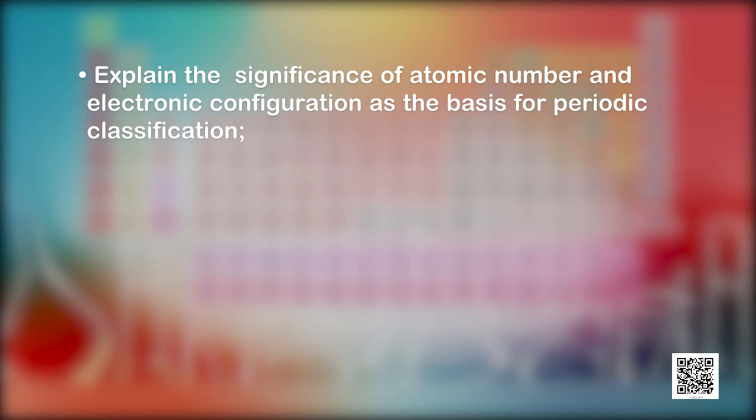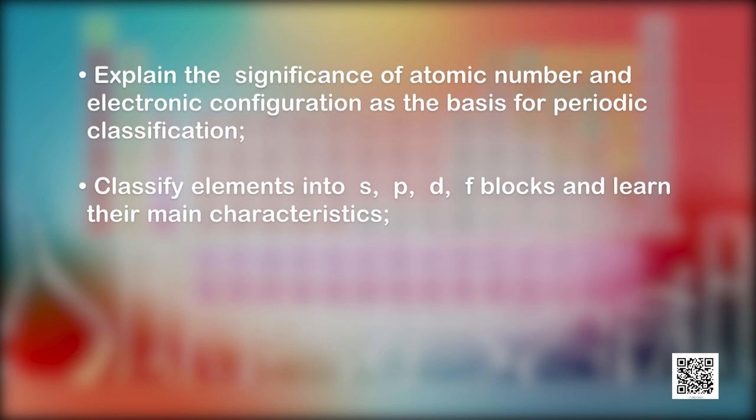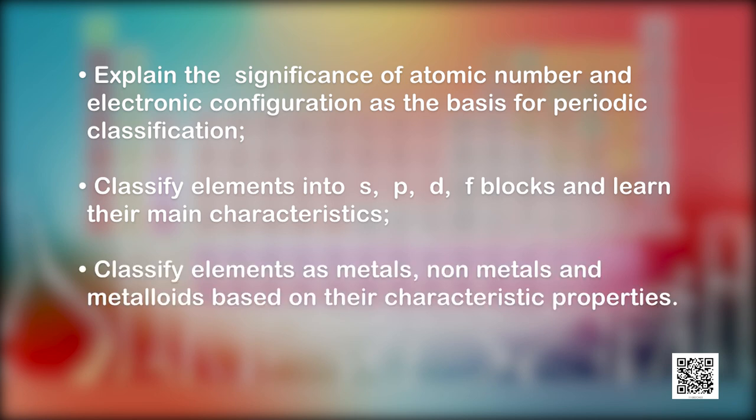We already know that the long form of the periodic table is the most widely used modern periodic table, arranging all known elements into 7 periods and 18 groups. We are going to discuss how elements are placed in the periodic table based on their electronic configuration. After this discussion, you will be able to explain the significance of atomic number and electronic configuration as the basis of periodic classification, classify elements into S, P, D, and F blocks, and classify elements as metals, non-metals, and metalloids.